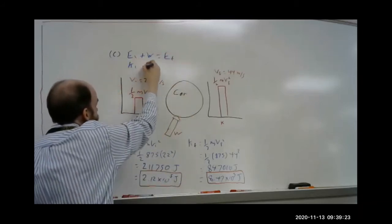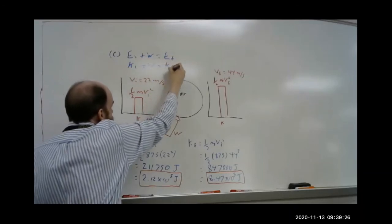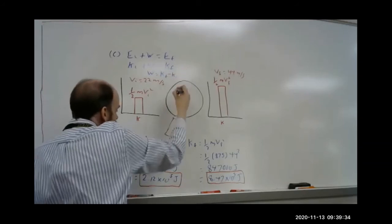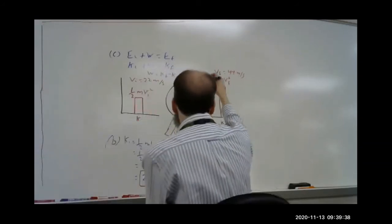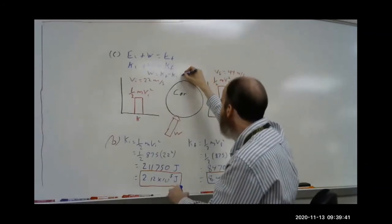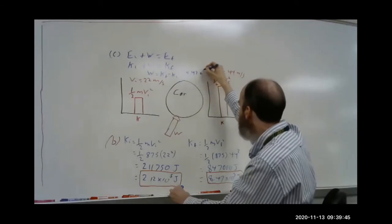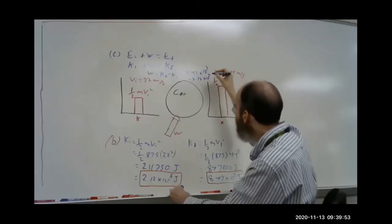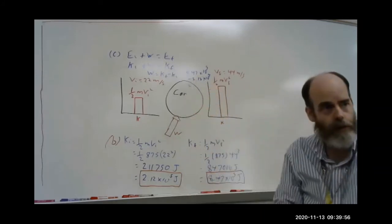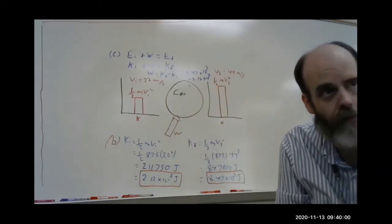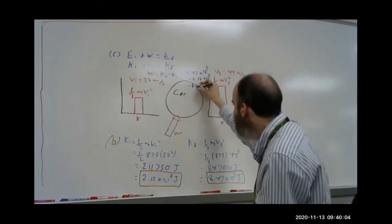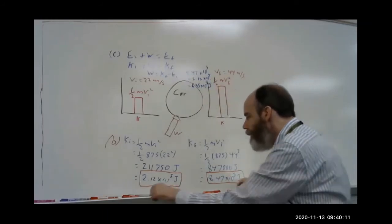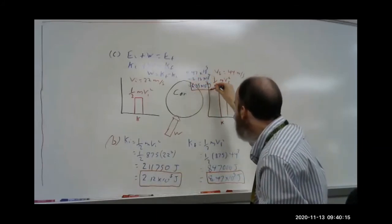So it's k initial plus work equals k final. So the work is k final minus k initial. So we just subtract these two. It becomes 8.47 times 10 to the 5th minus 2.12 times 10 to the 5th, and that equals 6.35 times 10 to the 5th joules. So that's the answer to C, the amount of work done.